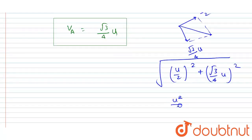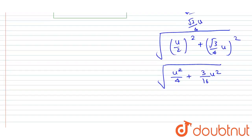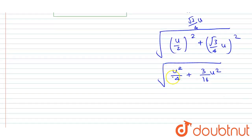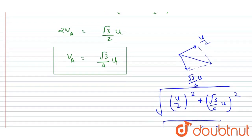Now it will be u square by 4 plus 3 by 16 u square under root. Now it is 4 by 16, it is 3 by 16, so it will be 7 by 16 u square under root.